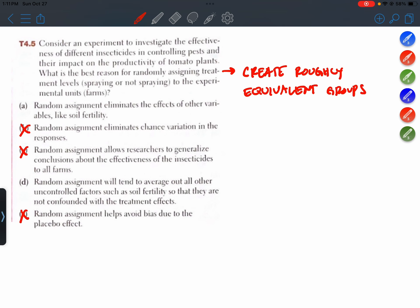Also, the word bias usually isn't used when we're talking about experiments. Usually confounding is the term that we use with experiments, and bias is a term for sampling.